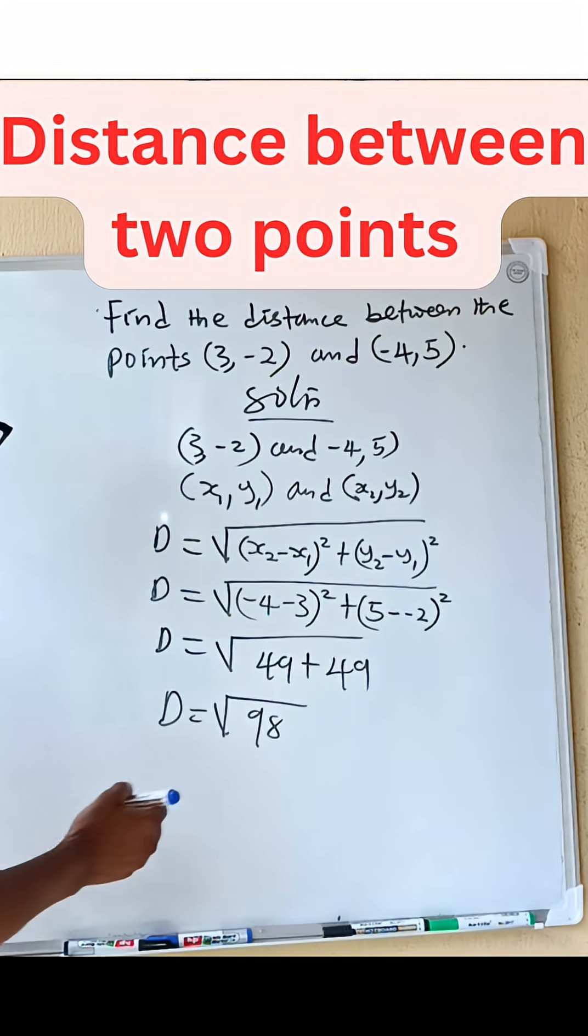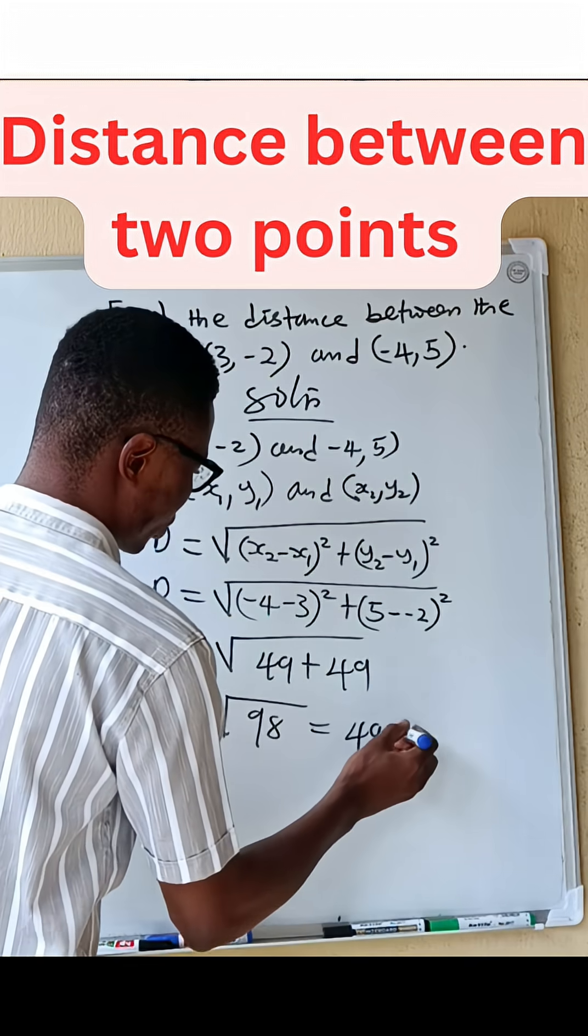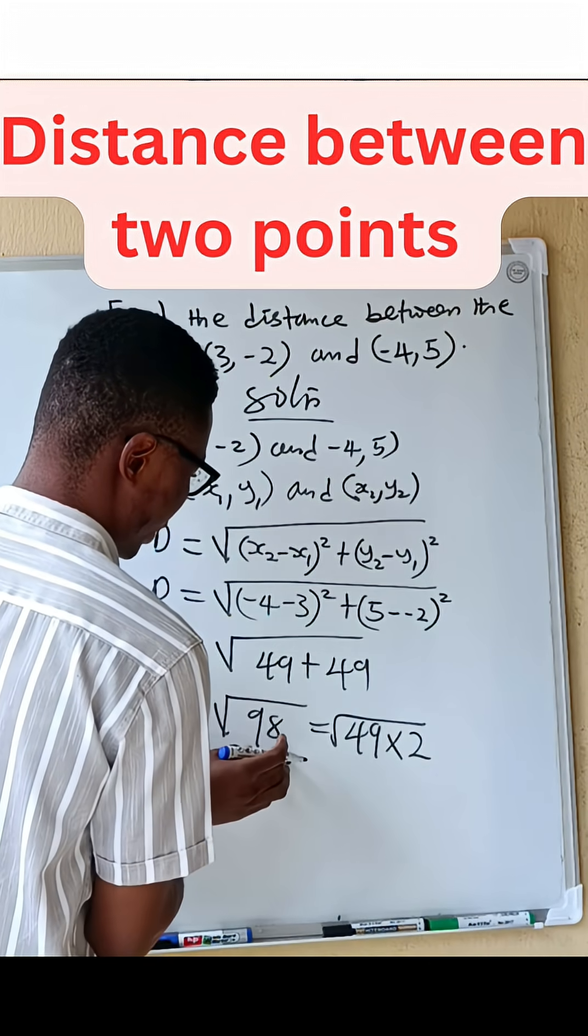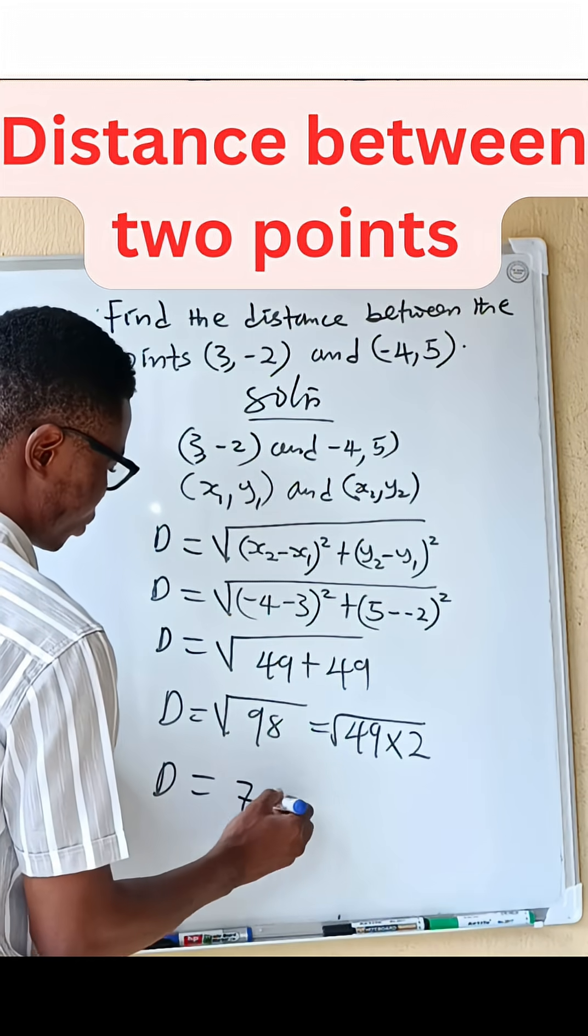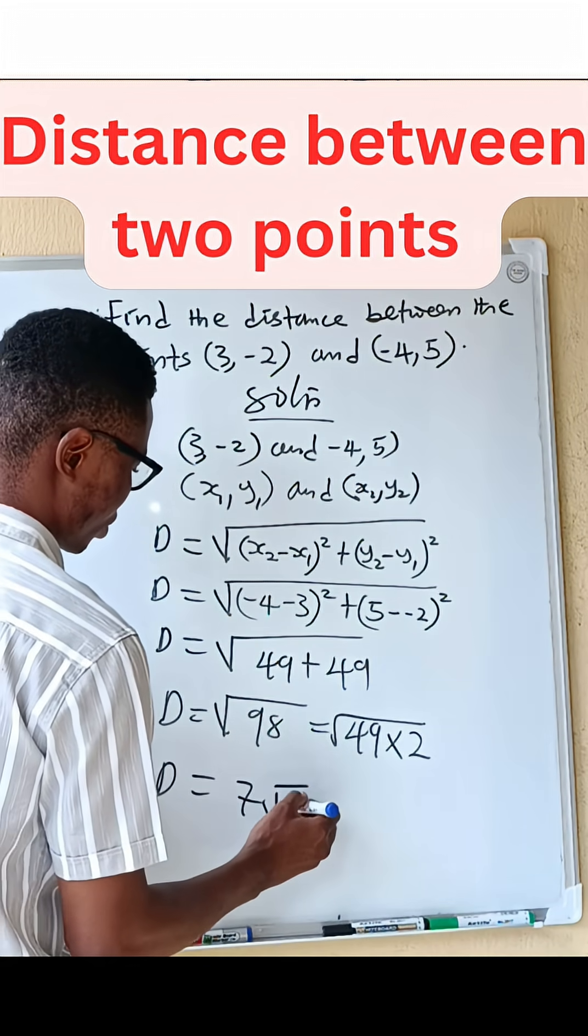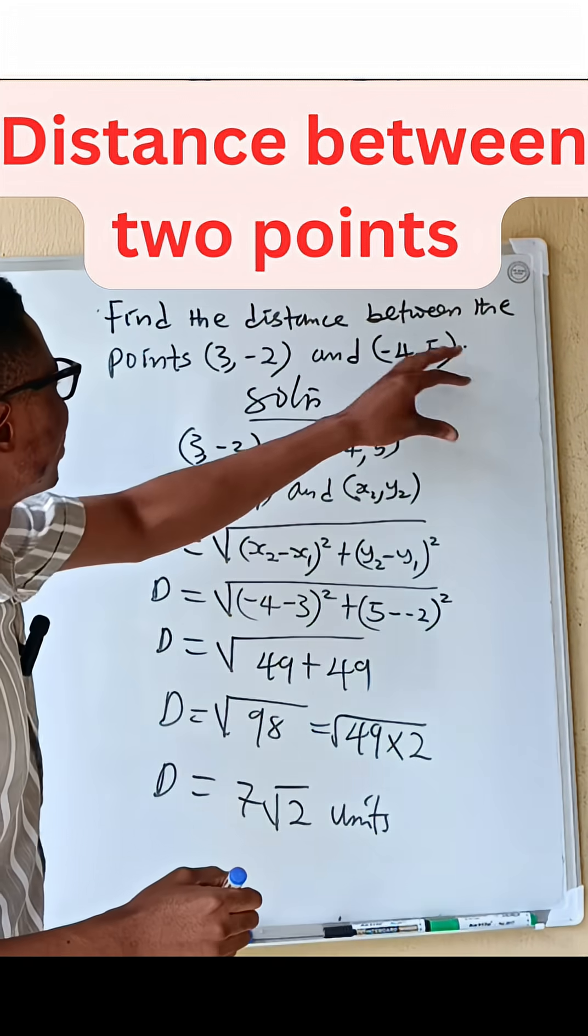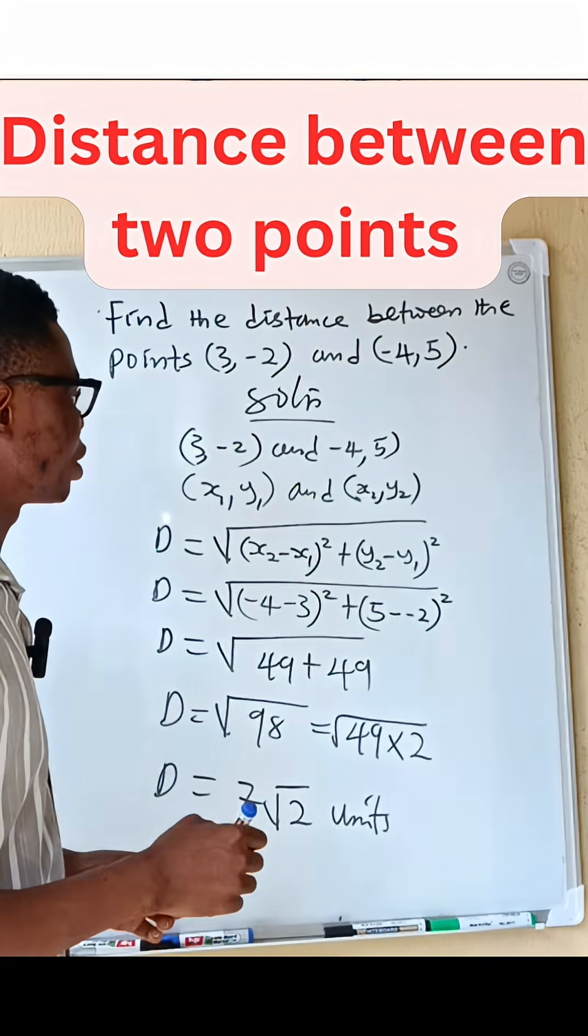You can apply SURD here. You can say that 49 times 2 is going to give you 98, so D equals take the root of 49, and that is 7, then root 2. A unit.